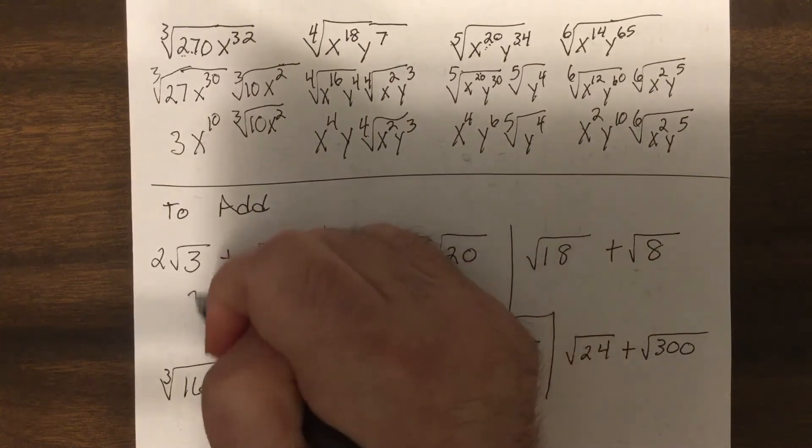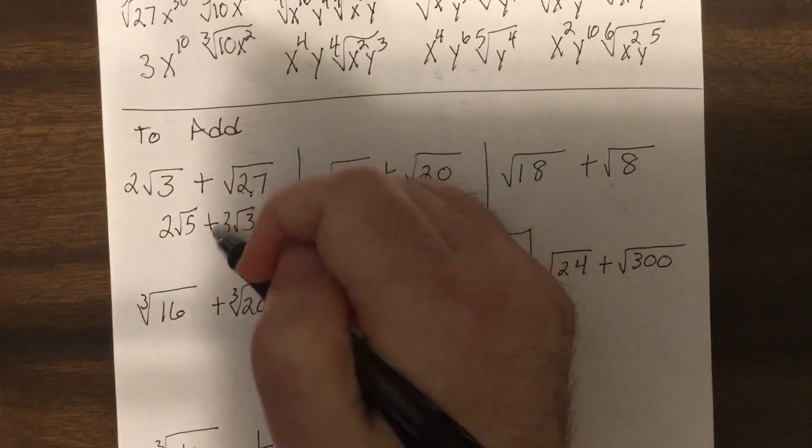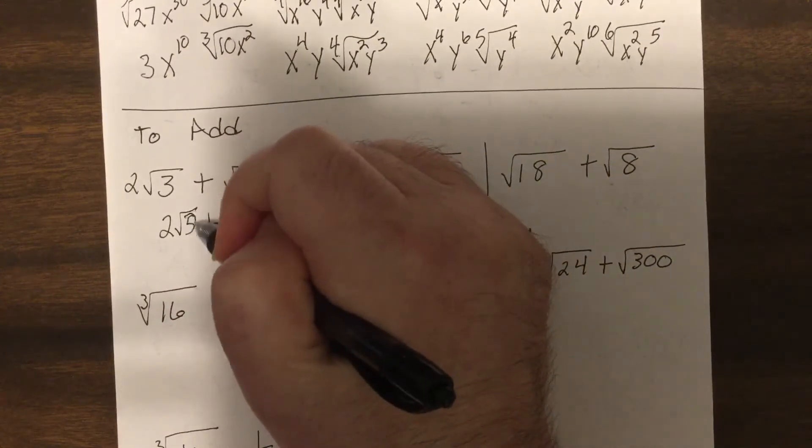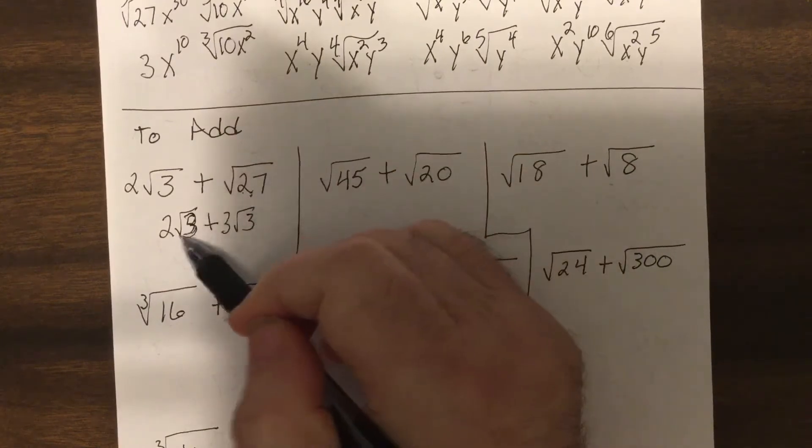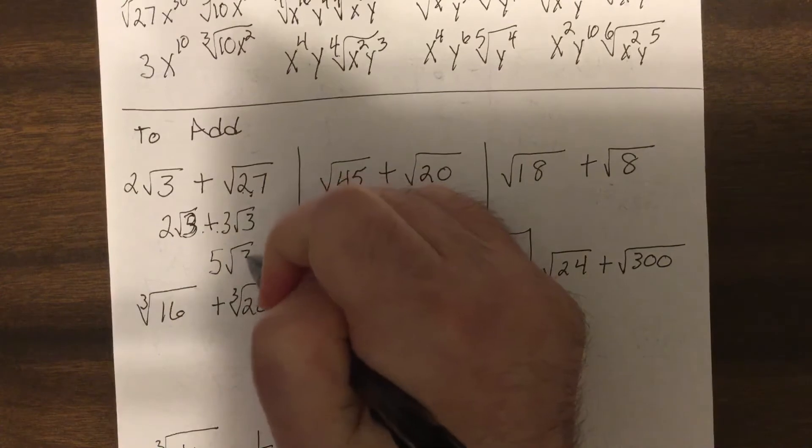Now some people find this very easy. Some people find it very challenging. Oops, I changed it to a five. Oops. So two square root of threes plus three of them would be five square root of threes.